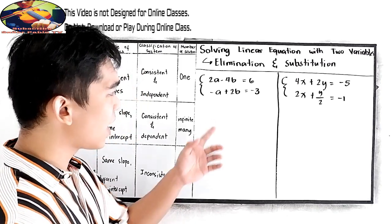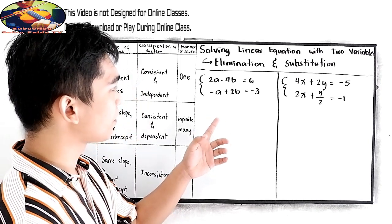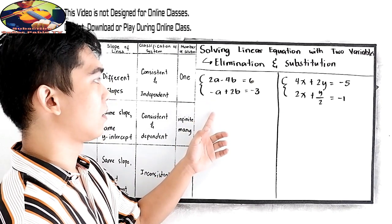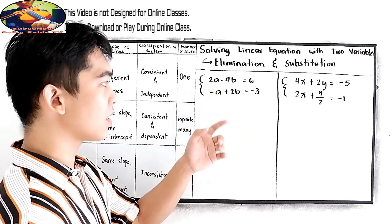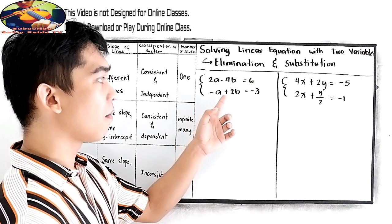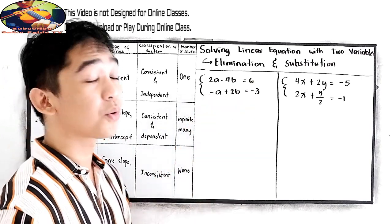So let's try this example number 1. So 2x minus 4b is equal to 6 and negative a plus 2b is equal to negative 3.